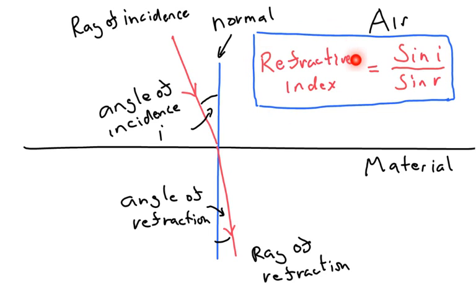It's the fact that the refractive index is equal to sine of the angle of incidence divided by the sine of the angle of refraction. So what do we mean?